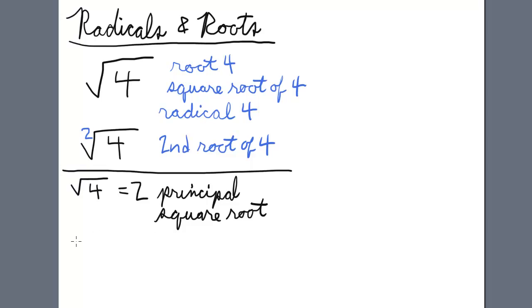Some teachers, however, will insist that when they put a question that's radical 4, they want to see this: 2 and negative 2, which is also correct. You can also rewrite this as plus or minus 2. Just be mindful to adjust to your circumstances in your particular class.